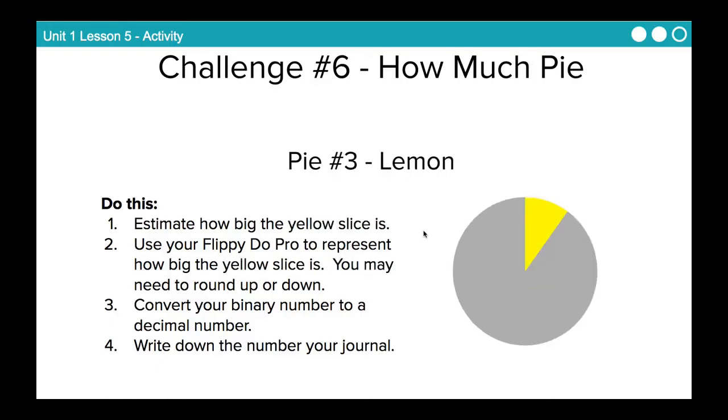Same thing for pie number 3. Look at this slice here. Estimate how big you think that is. You think that's a third, two-thirds, a quarter, what have you. And then use your Flippy-Doo Pro to represent how big the yellow slice is. You may need to round up or down. Again, I'm going to keep highlighting that. You're almost certainly going to need to round up or down. Which way you round is your choice. Convert your binary number to a decimal number, and then write down that number in your journal.